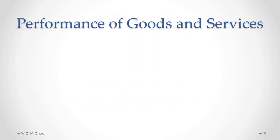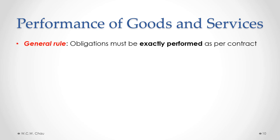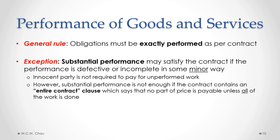What constitutes acceptable performance under a contract? The general rule is that contractual obligations must be exactly performed as per the contract. However, a significant exception is that substantial performance may satisfy the contract if the performance is defective or incomplete in some minor way. Even where substantial performance applies, the innocent party is not required to pay for the unperformed work. Substantial performance also does not apply where the contract contains an entire contract clause, which explicitly states that no part of the price is payable unless all of the work is done.